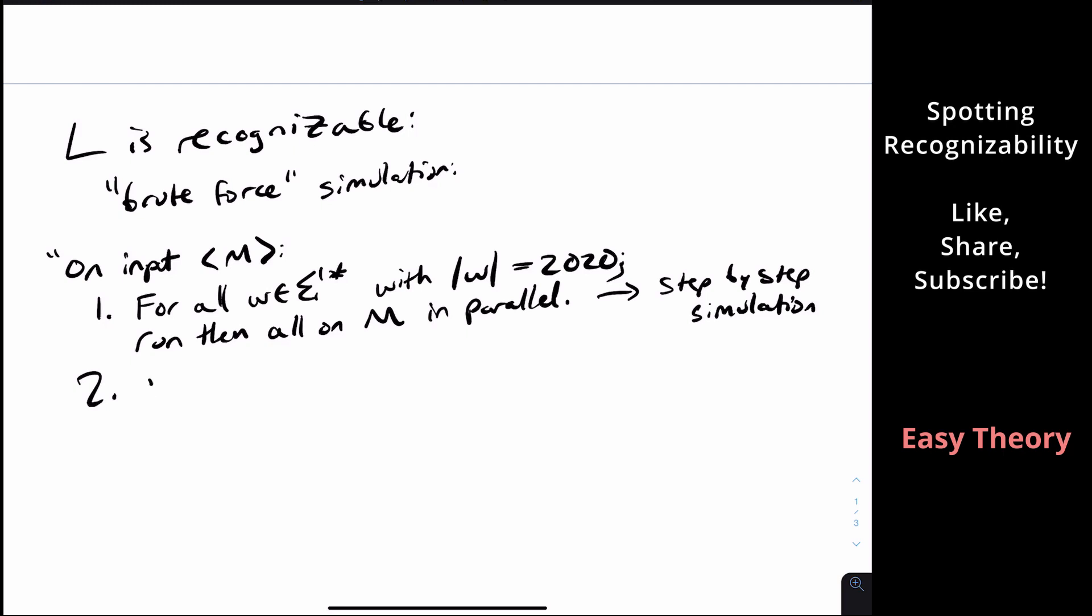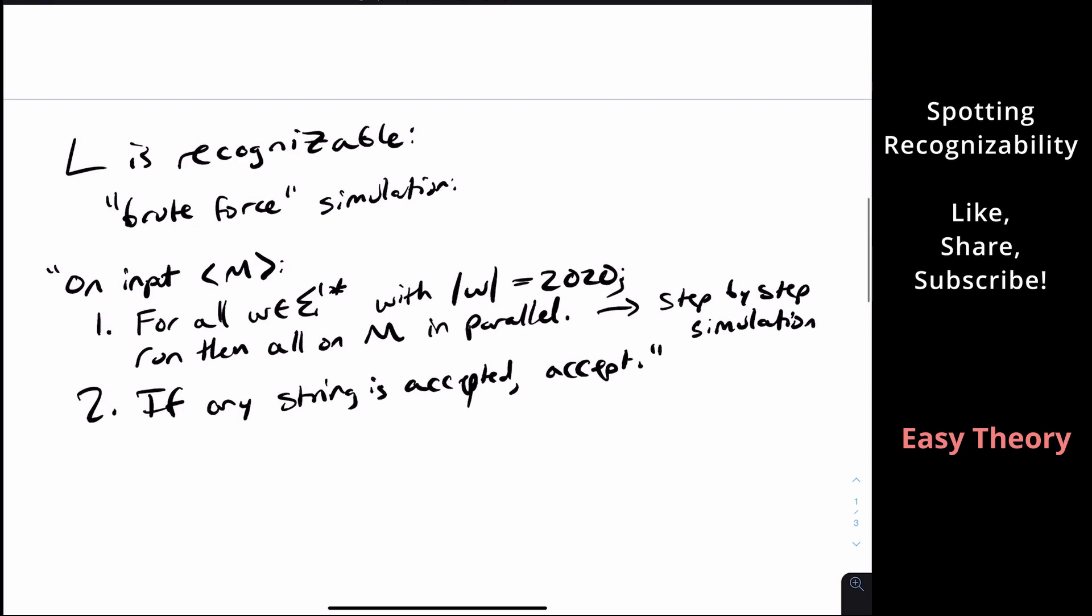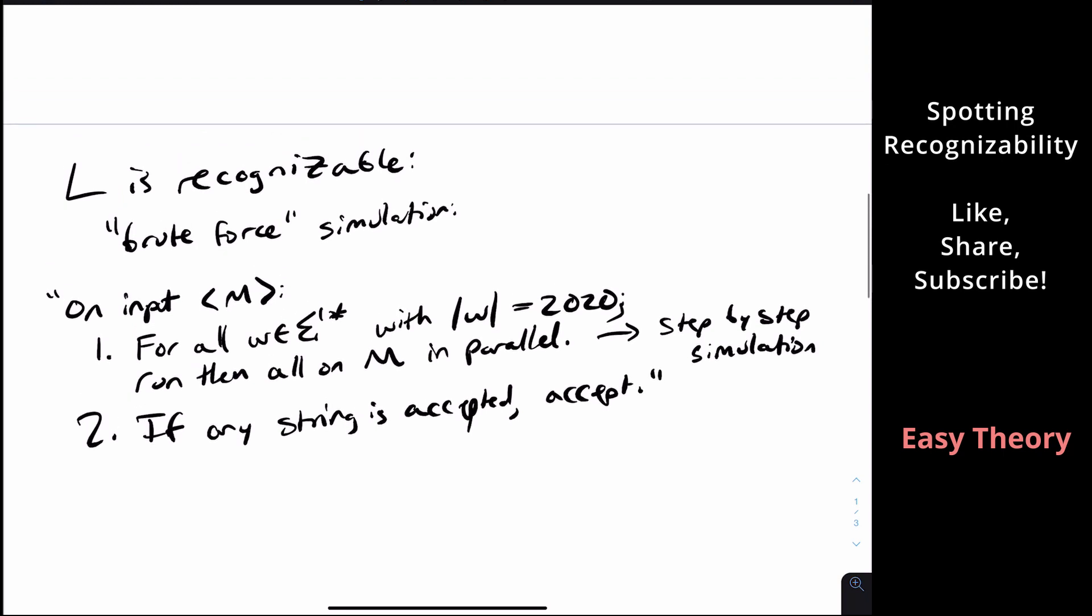So if any string is accepted, then that means that M accepts some string of length 2020, which means we should accept at that point. And we will guarantee to halt on the strings in L because if we're given the machine M, which is a string in L, let's suppose, then it must accept some string of length 2020, which means it must halt in step one at some point. It might take a long time, but it will halt at some point. And step two clearly runs in a finite amount of time.